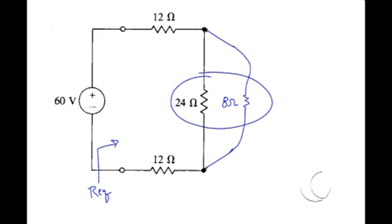And right here we have 8 ohms in parallel with 24 ohms, leaving us with a 6 ohm equivalent resistance.